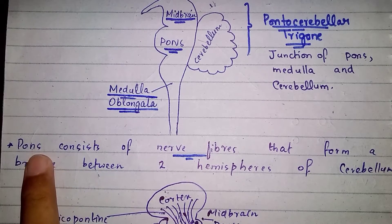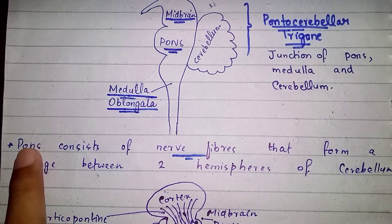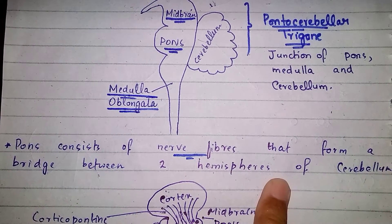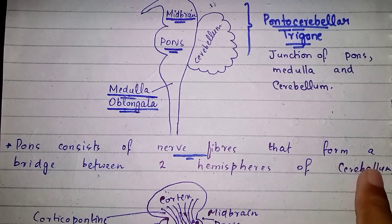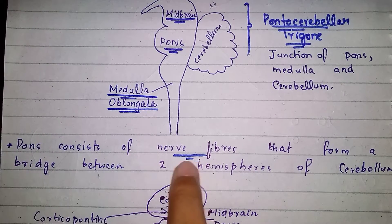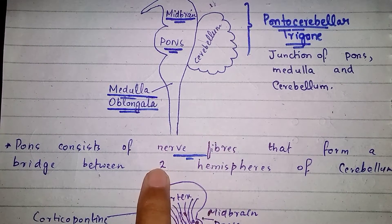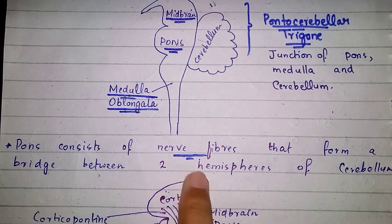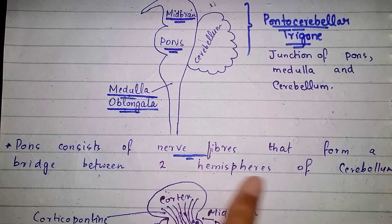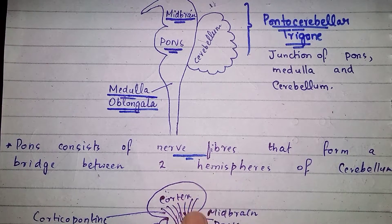If we are asked about the meaning of the word PONS, it means 'bridge.' So this bridge is between what structures? PONS consists of nerve fibers that form a bridge between the two hemispheres of the cerebellum. PONS acts as a bridge between the two hemispheres of the cerebellum, and this bridge is formed by nerve fibers. These nerve fibers are present within the white matter.